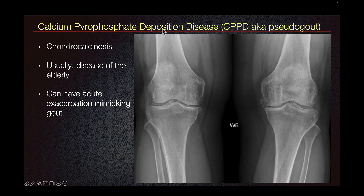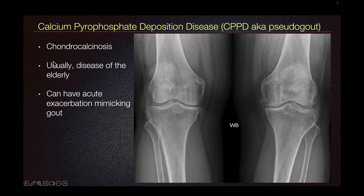Calcium pyrophosphate deposition disease, also called CPPD or pseudogout. The classic imaging finding is chondrocalcinosis. On the right, we see chondrocalcinosis right here and here. Usually this disease affects the elderly population and can have acute exacerbations which can mimic gout.